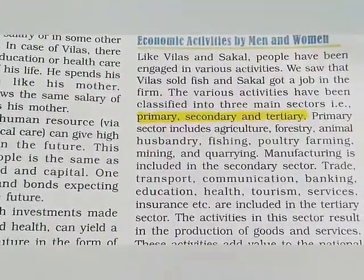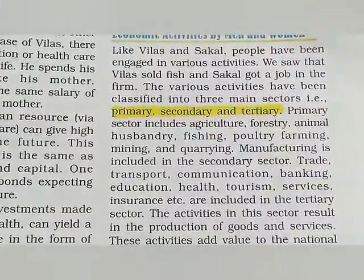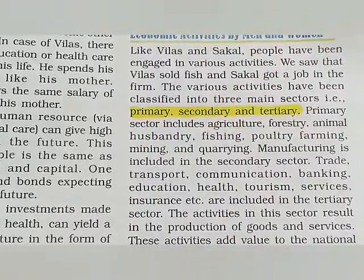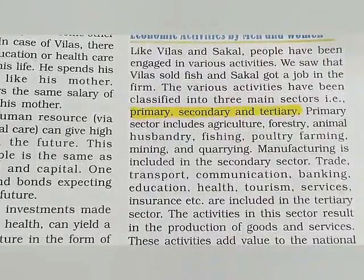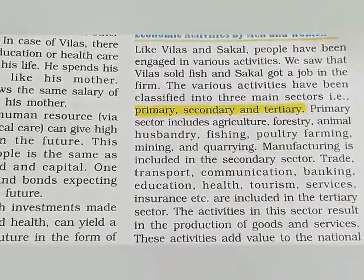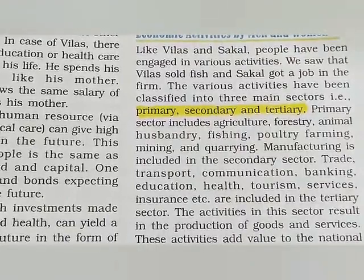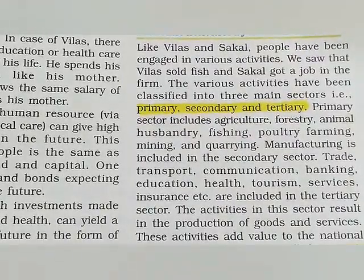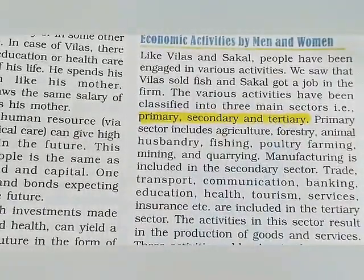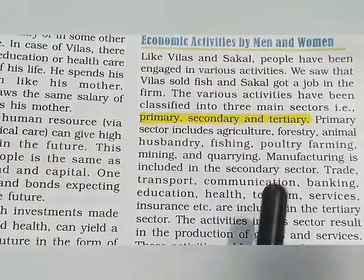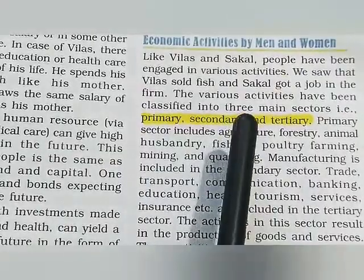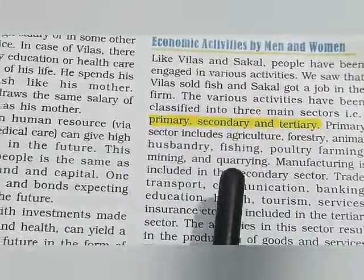Taking the example of both Villas and Circle — Villas sold fish and Circle got a job in a firm. The various activities have been classified into three main sectors. Economic activities, also known as market activities, can be divided into three categories: primary sector, secondary sector, and tertiary sector. Primary sector is also known as the agriculture and related sector. Secondary sector is also known as the manufacturing or industrial sector. Tertiary sector is also known as the service sector.